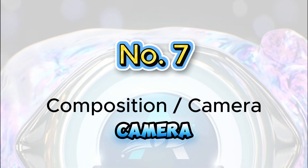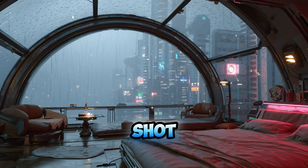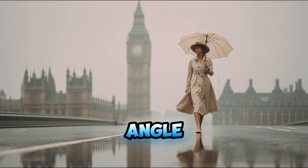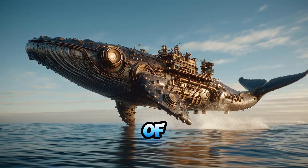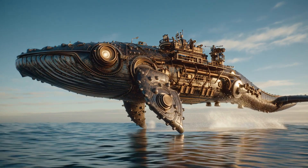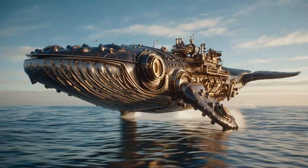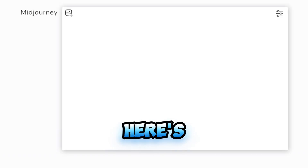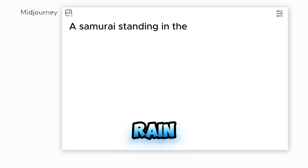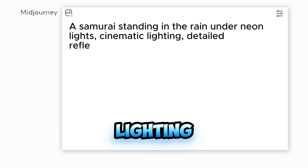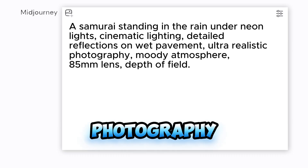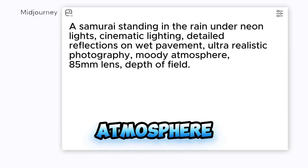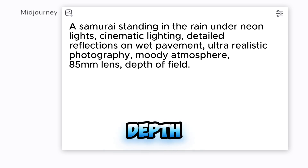Number 7: Composition or Camera. This defines the shot. Try close-up portrait, wide-angle landscape, overhead view, or cinematic composition using the rule of thirds. It's how you frame the story visually. Now let's put it all together. Here's an example of a balanced cinematic prompt: 'A samurai standing in the rain under neon lights, cinematic lighting, detailed reflections on wet pavement, ultra-realistic photography, moody atmosphere, 85mm lens, depth of field.'